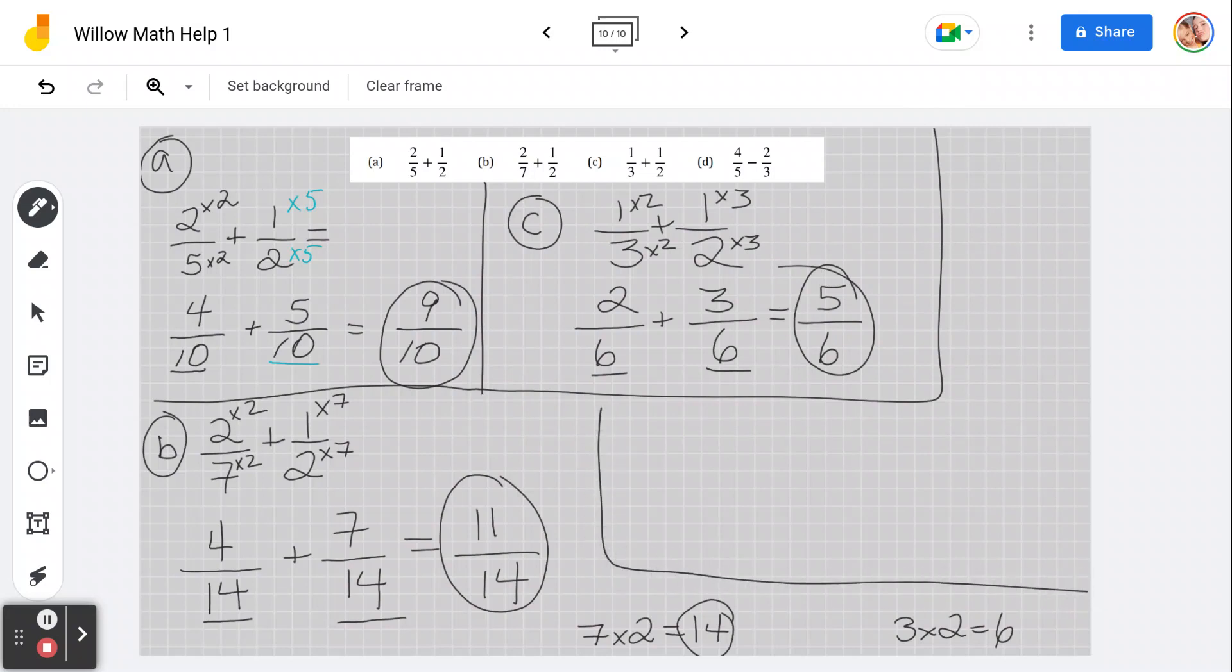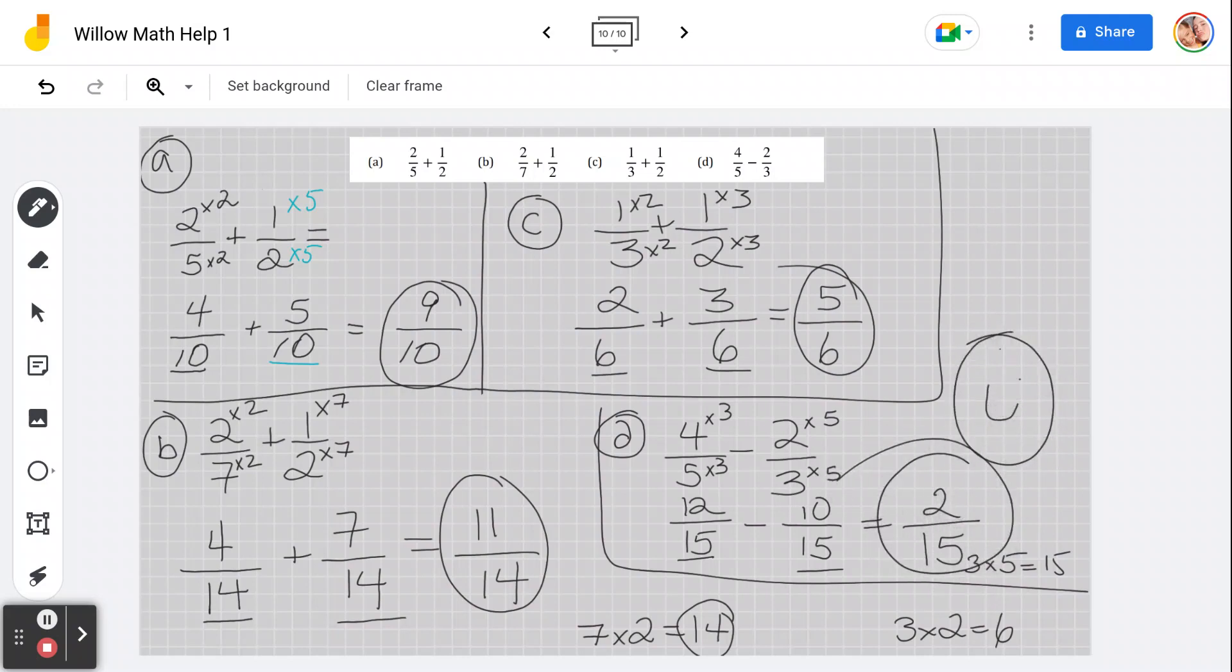Last one we're going to work on, D. I have 4 over 5 minus 2 over 3. It's the exact same. We need a common denominator. So 3 times 5, 15. I'm going to make 15 here, minus 15 here. Times this by 3 to get 15. So I times this by 3. That becomes 12. I multiply this by 5 to get 15. So I multiply this by 5. There we go. Now I have my common denominator of 15. 12 take away 10. 2. Happy face. That's my answer.